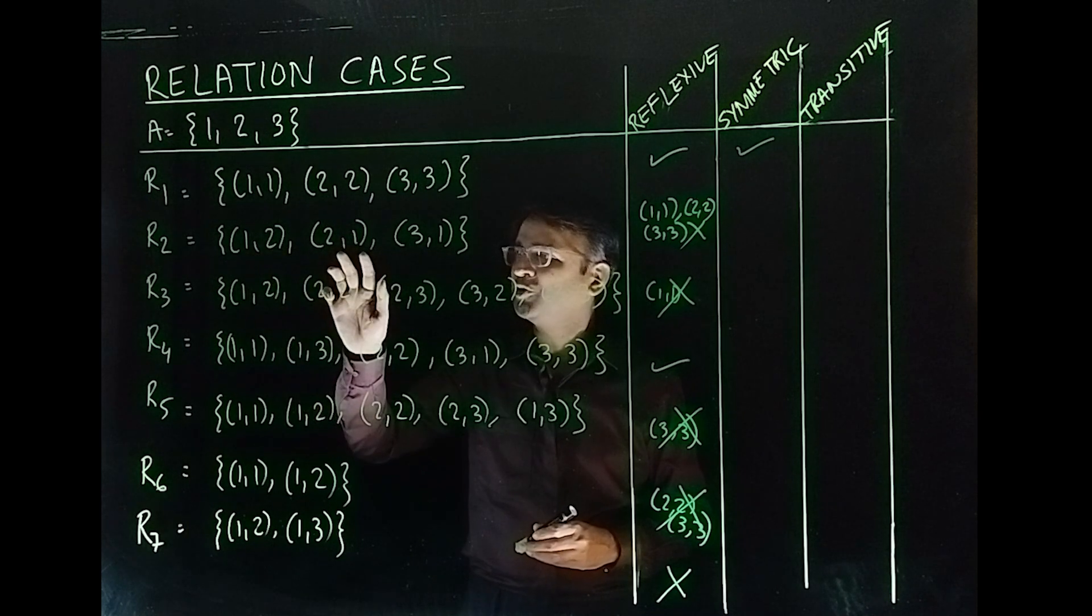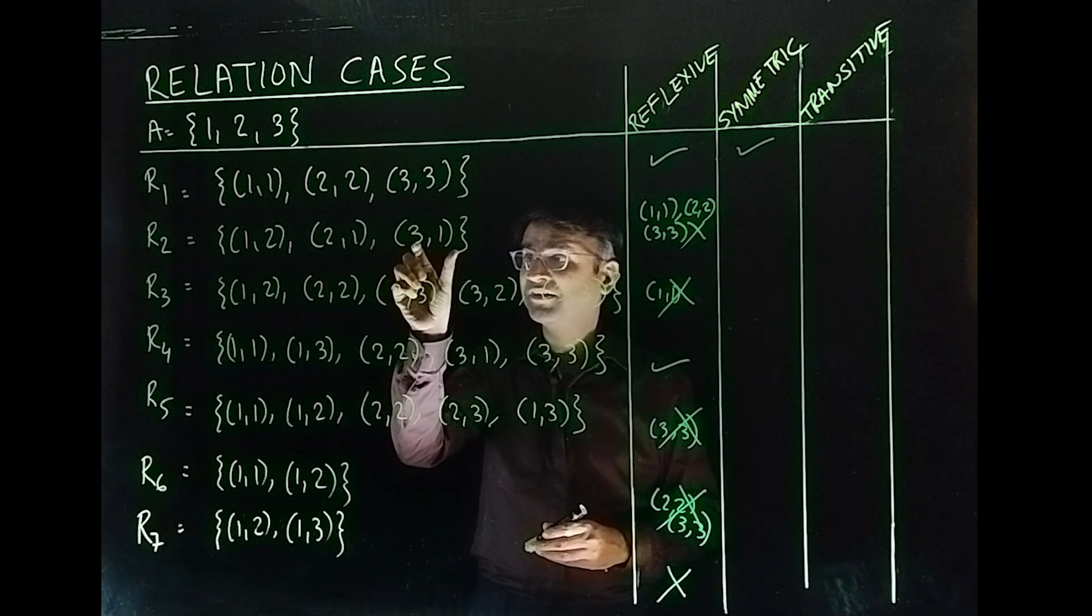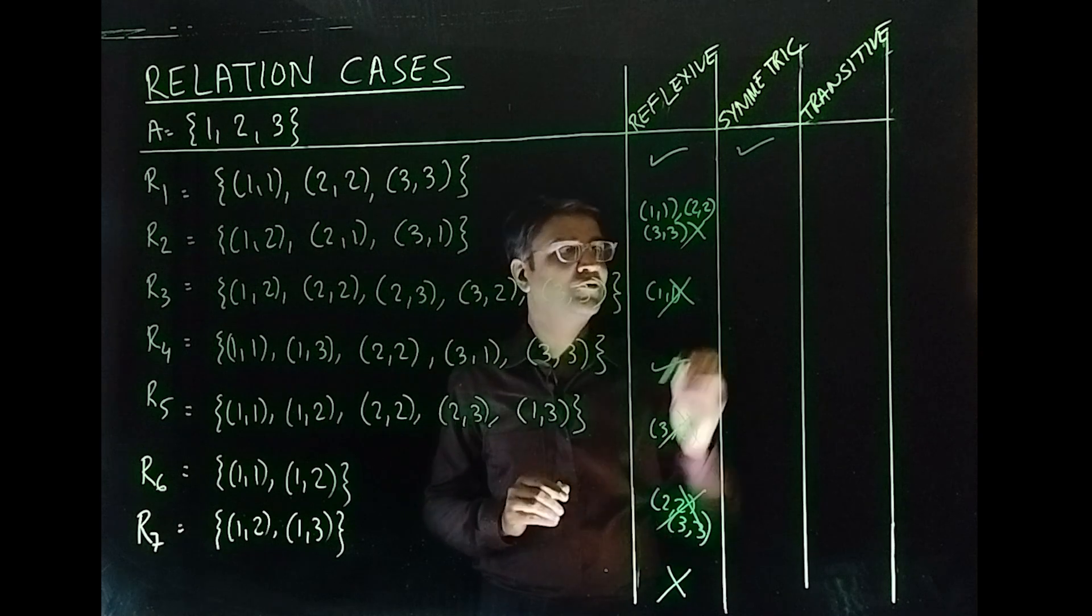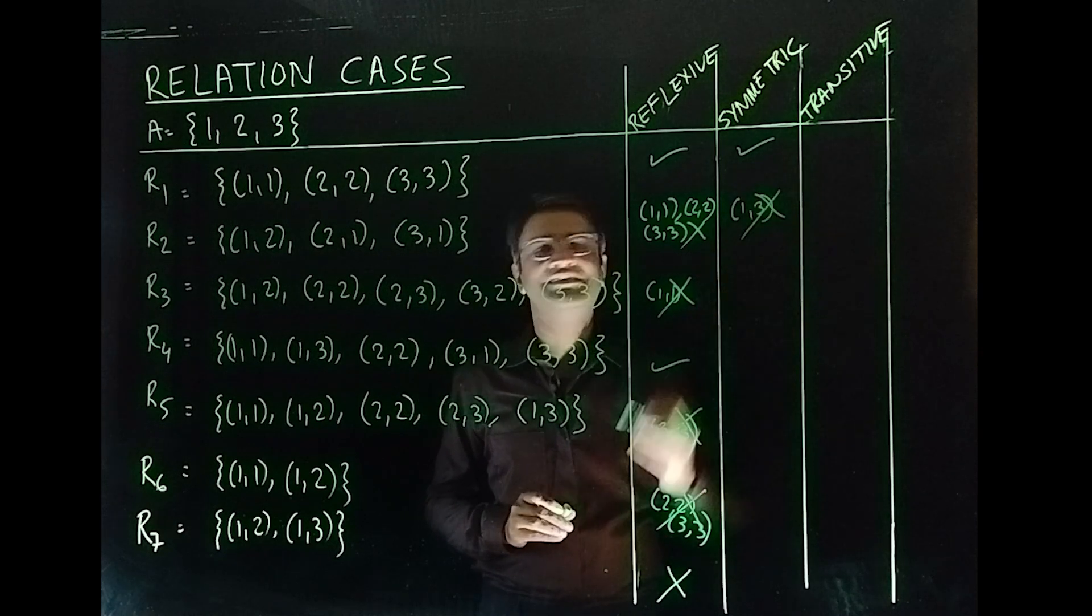What about this one? You have (1,2), (2,1), fine. But you have a (3,1). Where is (1,3)? (1,3) is missing. So, this is not symmetric.